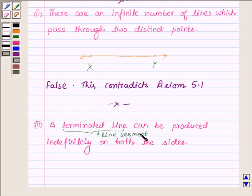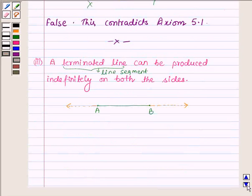So let us consider line segment AB. Now it can be extended on both sides, which is Postulate 2 of your book.